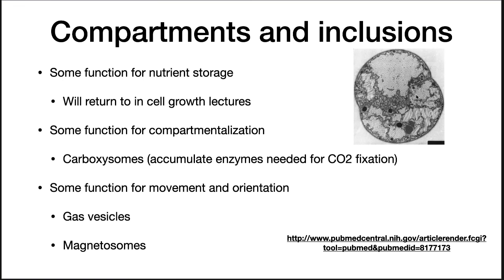There are also a number of inclusions in the cell. Inclusions are things visible in the microscope that serve some defined purpose. Some function for nutrient storage, some for compartmentalization — for example, carboxysomes accumulate the enzymes needed for CO2 fixation. Some function for movement and orientation. Gas vesicles of cyanobacteria are used to adjust height in the water column so the bacterium can get to the optimum amount of light — not too much and not too little. Another example is magnetosomes — these little magnets help bacteria tell up from down in their environment.